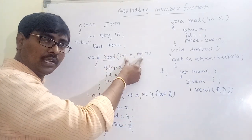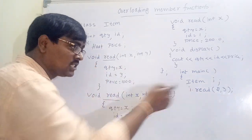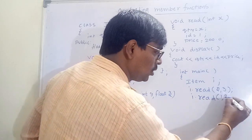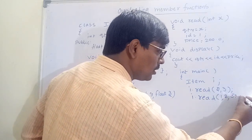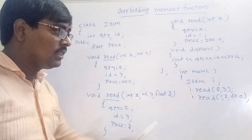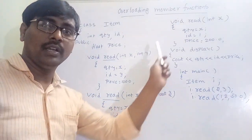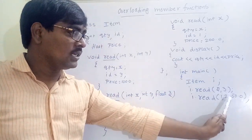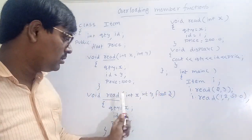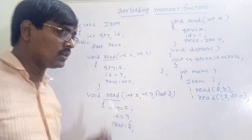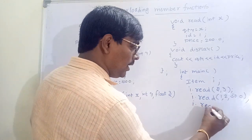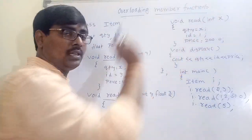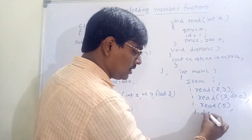For `i.read(1, 2, 50.0)` — three parameters: first integer, second integer, third float — this satisfied the second definition, so that function is called. For `i.read(5)` — a single integer variable — the third function is called. Finally, `i.display()` outputs the values.